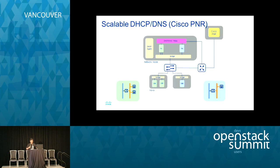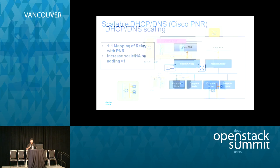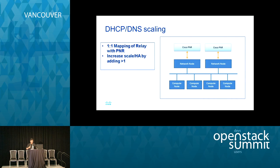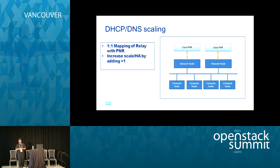With the PNR relay agent, we will achieve the tens of thousands of tenant network scale we are looking for. Every DHCP relay will be mapped to a PNR server, giving us HA as well as scale.